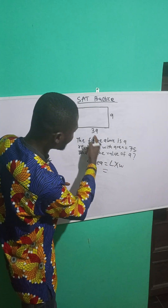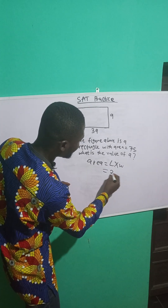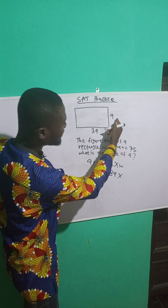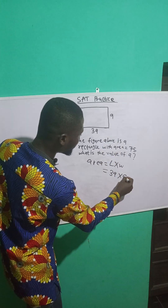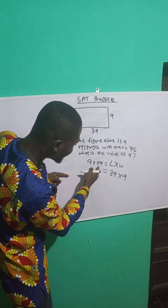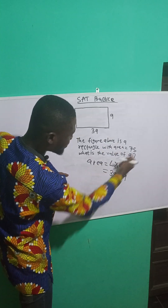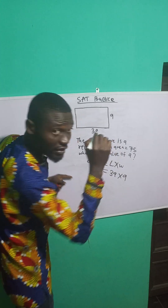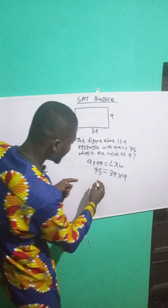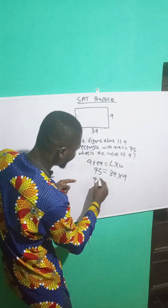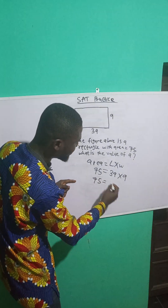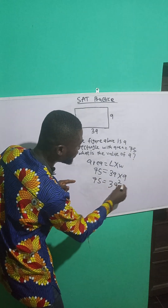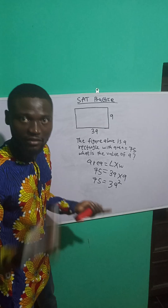The length is 3A and the width is A. We know that the area is 75, so I'll put 75 here. So I have 75 is equal to 3A times A, which is 3A squared.